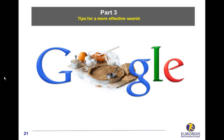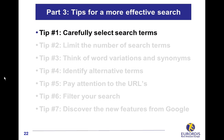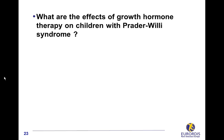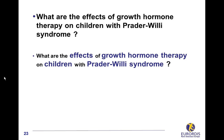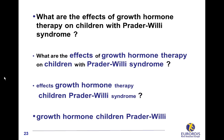Here are some tips to help you improve the effectiveness of your search. Example: 'What are the effects of growth hormone therapy on children with Prader-Willi syndrome?' It's neither useful nor necessary to type the whole question. First, remove stop words — common words with no specific meaning like what, are, the, of, on, with. Then focus on the specific terms. Effects, syndrome, and even therapy are not essential. So typing 'growth hormone children Prader-Willi' in the search box may provide you with relevant results.